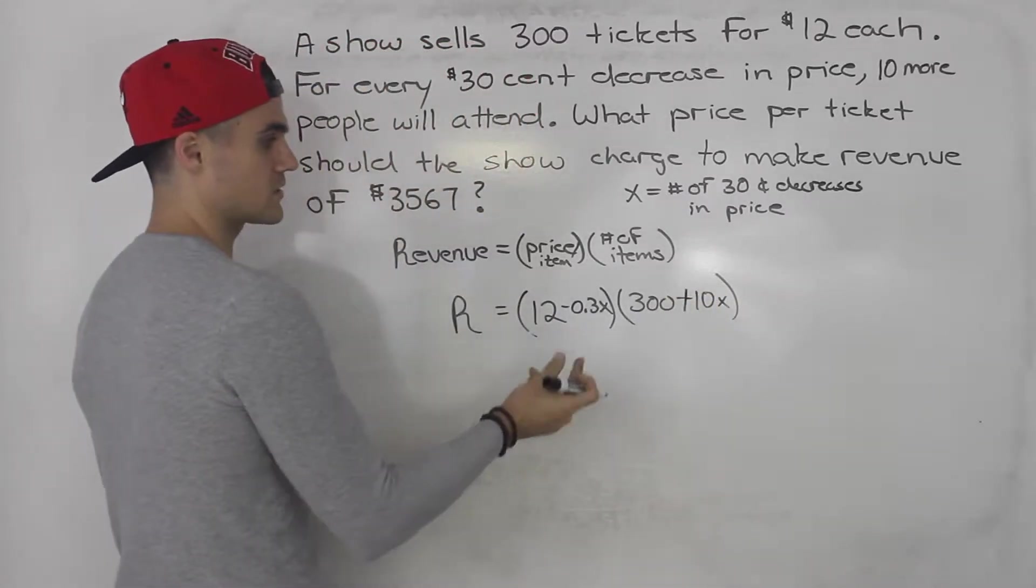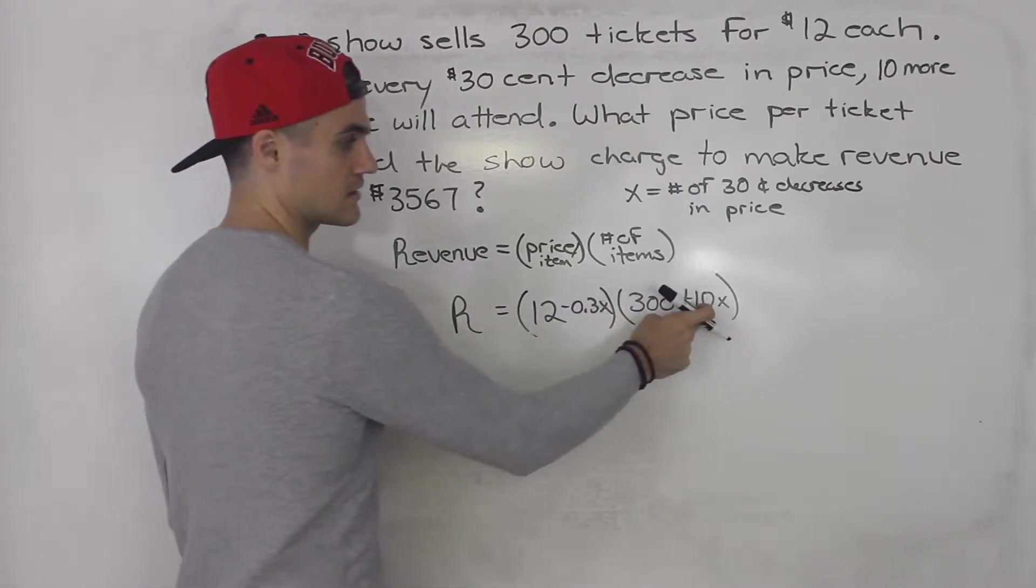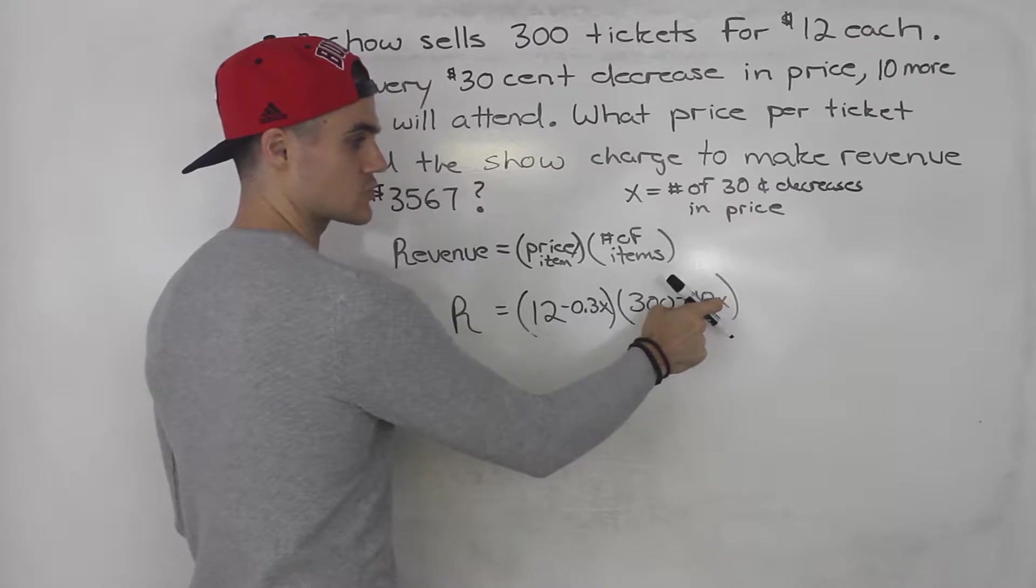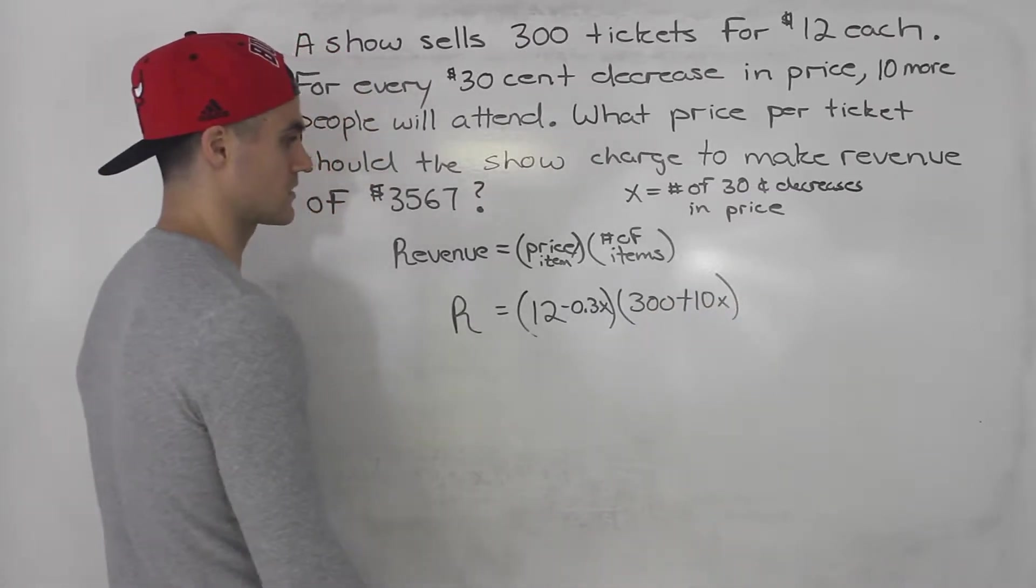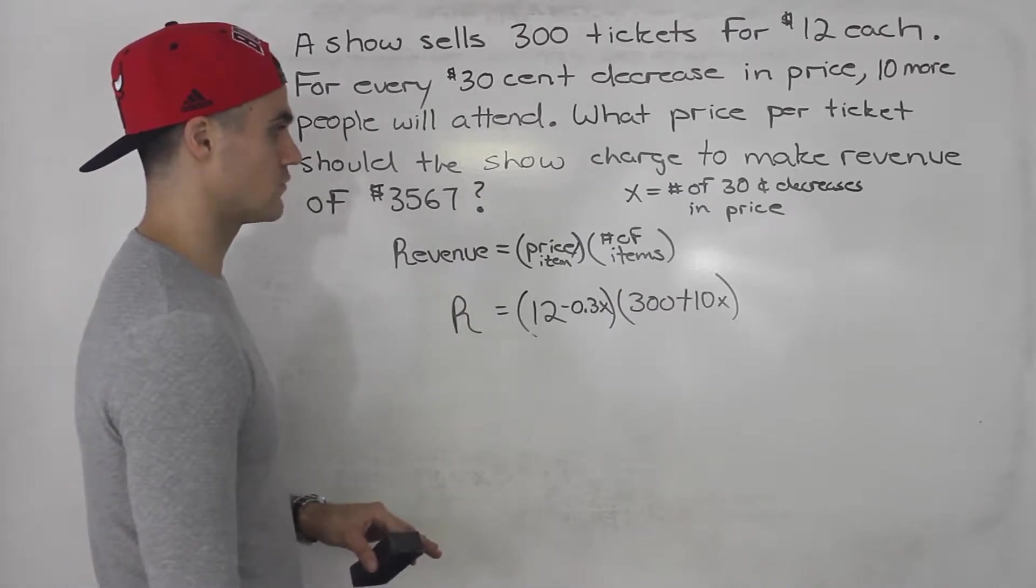So if we decrease the price by 60 cents, so x would be 2, then 20 more people are going to attend. 20 times 2, and so on. So this here is your revenue function.